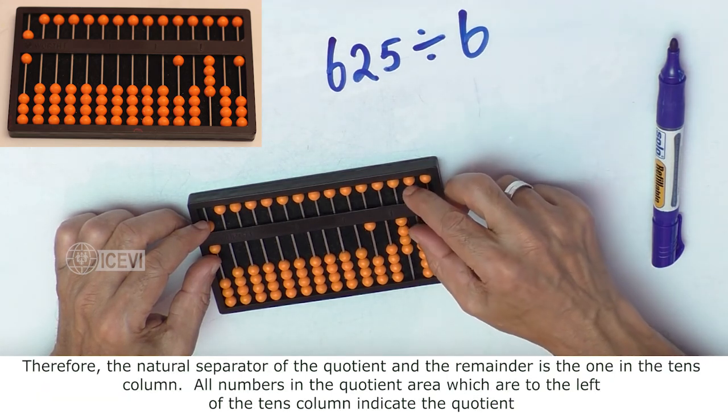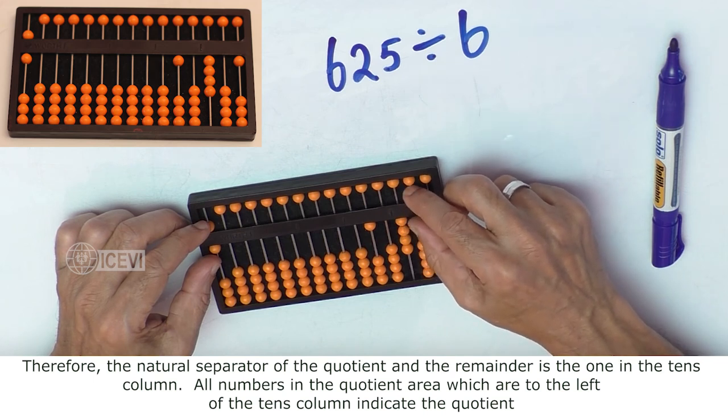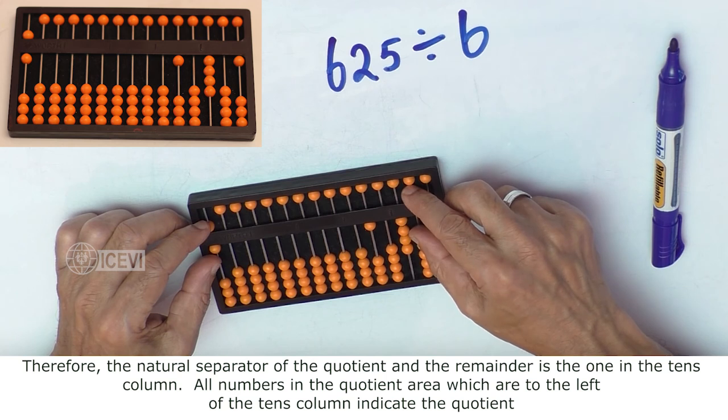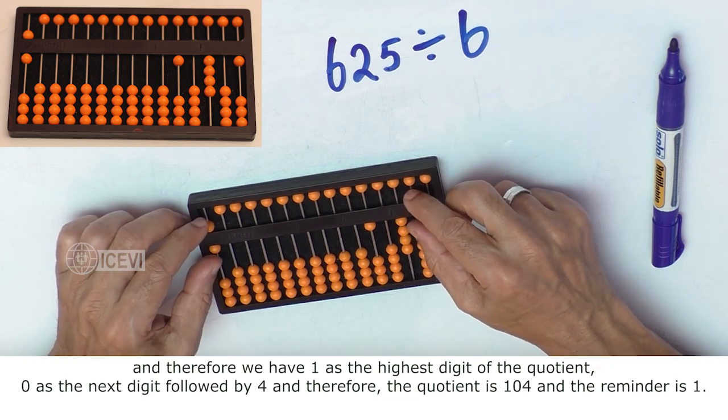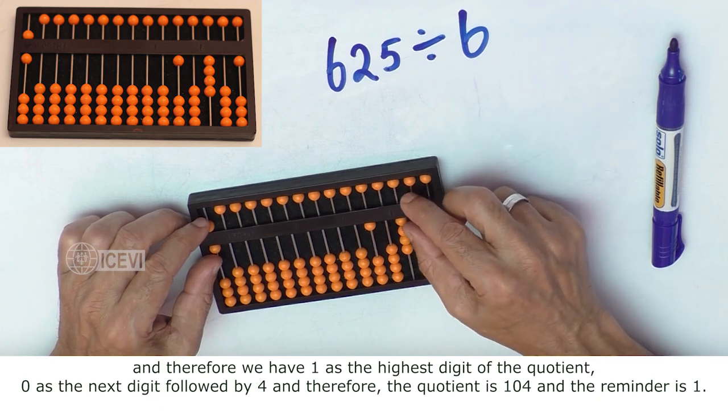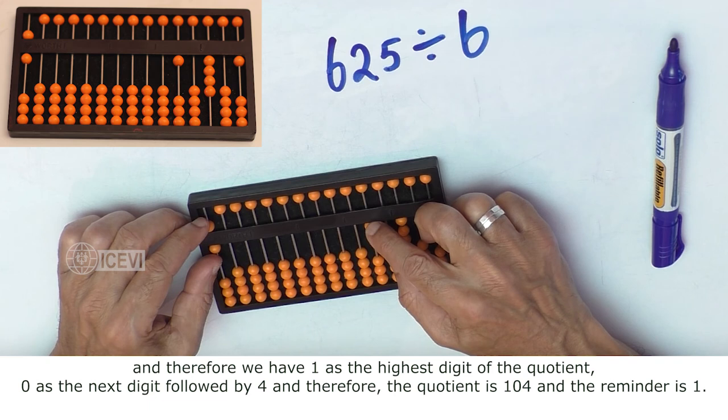The natural separator of the quotient and the remainder is the one in the tens column. All numbers in the quotient area which are to the left of the tens column indicate the quotient, and therefore we have 1 as the highest digit of the quotient, 0 as the next digit, followed by 4.